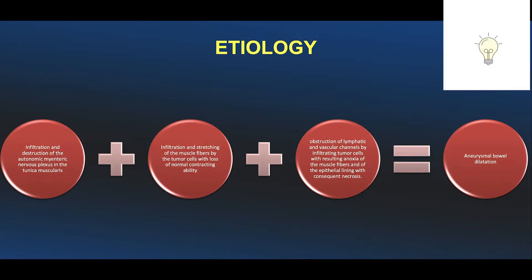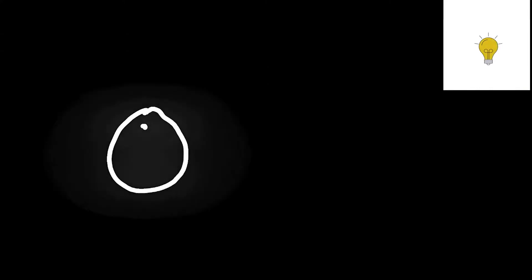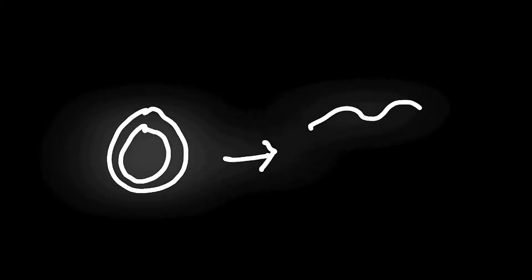Aneurysmal bowel dilatation is due to infiltration and destruction of the autonomic myenteric nervous plexus in the tunica muscularis, resulting in infiltration and stretching of the muscle fibers by the tumor cells, with loss of normal contracting ability. This results in obstruction of lymphatic and vascular channels by infiltrating tumor cells, leading to anoxia and consequent necrosis.